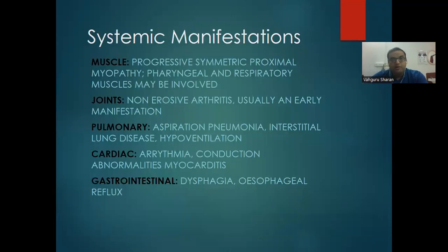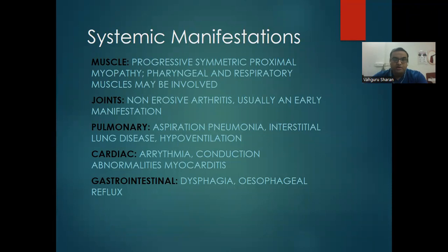Systemic involvements of dermatomyositis: as the name suggests, muscles are mostly involved — progressive, symmetrical, proximal muscle weakness or myopathy. Pharyngeal and respiratory muscles can also be involved. Joints: non-erosive arthritis, usually an early manifestation. Pulmonary: aspiration pneumonia, interstitial lung disease, hypoventilation. Cardiac: conduction abnormalities and myocarditis. GI system: dysphagia and esophageal reflux.